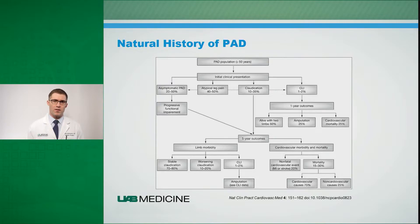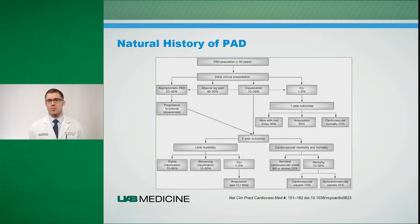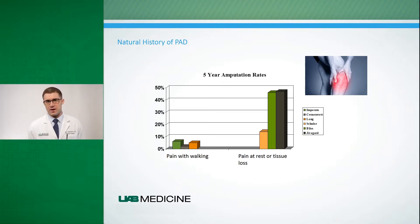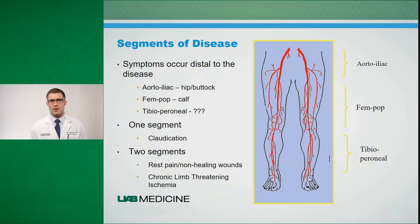Once you do progress to a chronic limb-threatening ischemia diagnosis, your risk of amputation goes very high compared to patients with just standard peripheral arterial disease. The five-year amputation rate is well below 10 percent in patients with standard claudication, and that approaches 50 percent at five years in those with a chronic limb-threatening ischemia diagnosis.